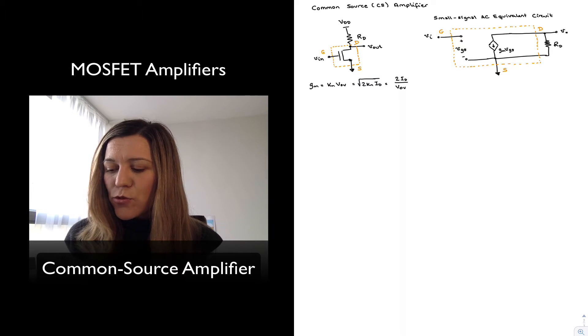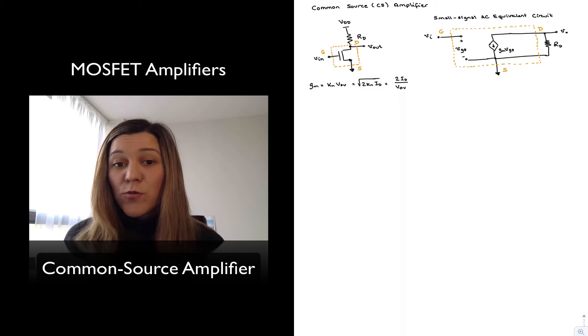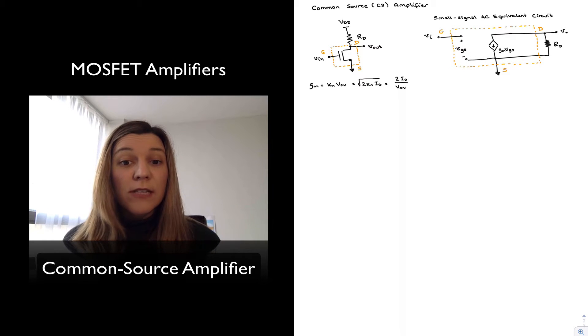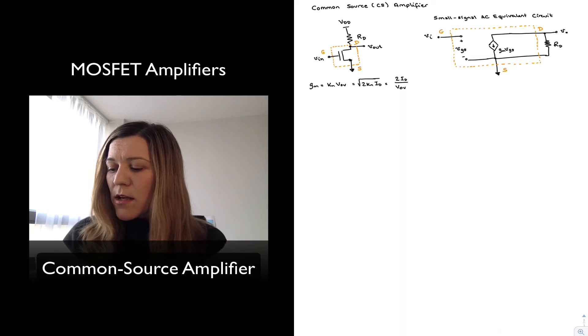The source being the common terminal, and since we're trying to come up with an expression for its small signal characteristics - gain, input resistance, output resistance - I have drawn the small signal AC equivalent circuit on the right hand side.